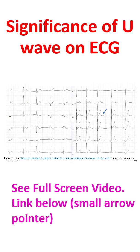An interesting case of U wave due to compression of the right ventricle by a reconstructed stomach tube after surgery for esophageal cancer has been reported. Persistent giant U wave inversion was noted in a case after anoxic brain injury.